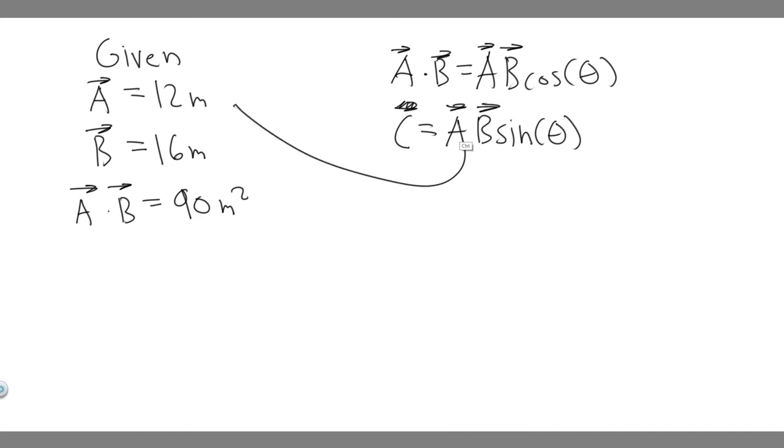So we know what vector A is, we know what vector B is, and we need to find theta. If we can find the angle theta, we're going to be able to solve it, because we'll have everything we need.